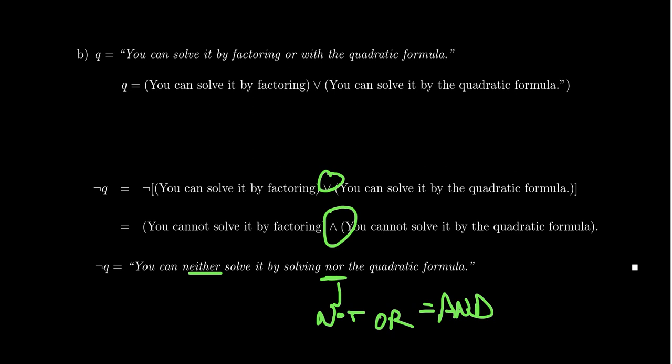Maybe if you're trying to solve a cubic or exponential equation and I say 'you can solve it by factoring or the quadratic formula,' you'd say no — factoring won't work and the quadratic formula won't work. That's a false statement. Both constituent statements have to be false in that situation for it to be the negation.